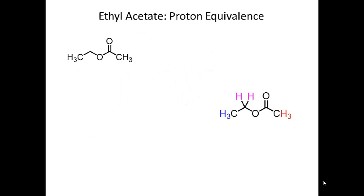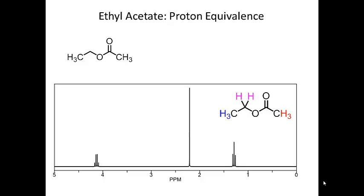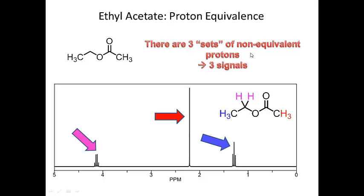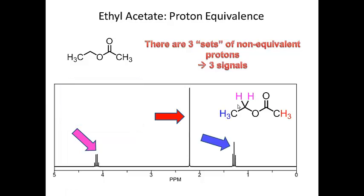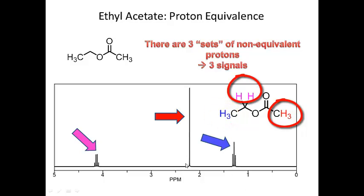Let's take a simple example: ethyl acetate. If we bring up the spectrum, we see three signals. Each set of non-equivalent protons gives its own signal. Looking at the molecule, you have a CH3 here, a CH3 here, and a CH2 here — three non-equivalent sets of protons. This signal is representative of the pink set, this one of the red set, and this one of the blue set. We get three signals because we have three non-equivalent sets of protons.